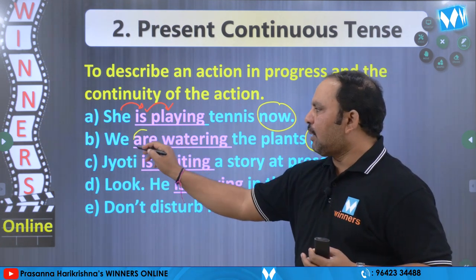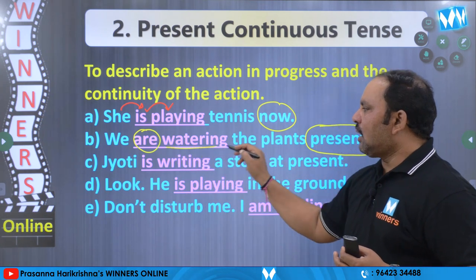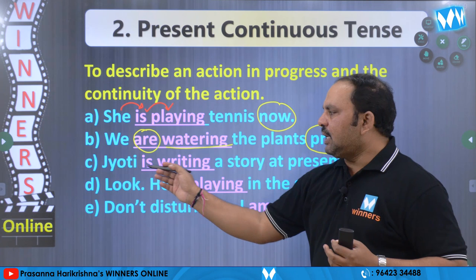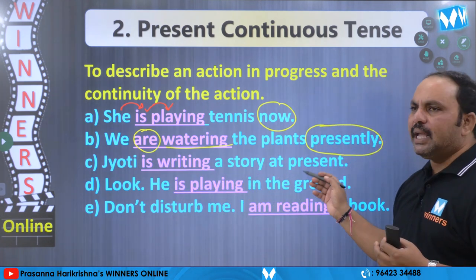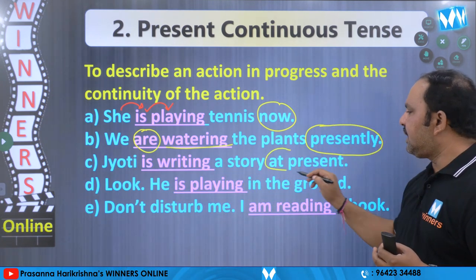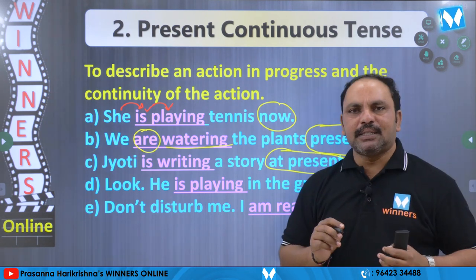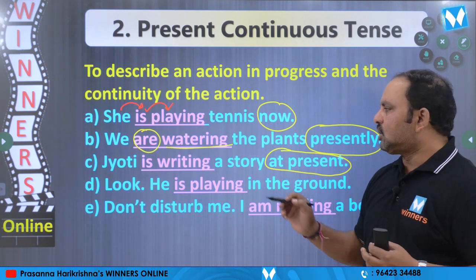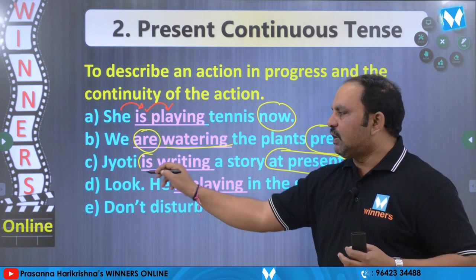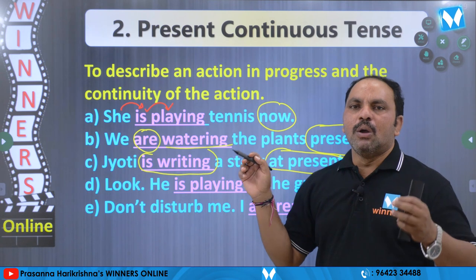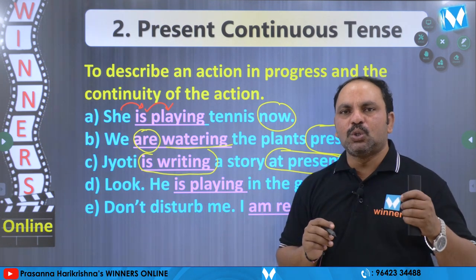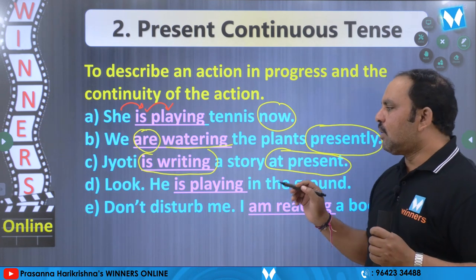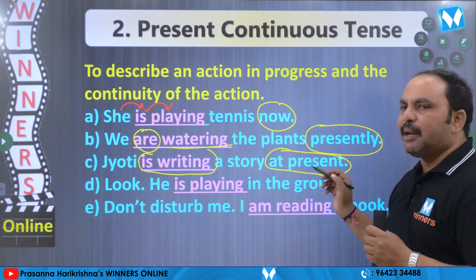We ane subject undikabatti 'are'. Are tharavata V4 form ni upayoginchamu. And: Jyoti is writing a story at present. Induduloo clue word enti? 'At present' ane it vaantti clue word. At present ane it vaantti clue word vacchina apadu, is writing ane it vaantti verb ni manam upayoginchamu. At present prastutamu, Jyoti oka letter rastu undi anu cheptunnaamu. Moodavadhi: Look, he is playing in the garden.